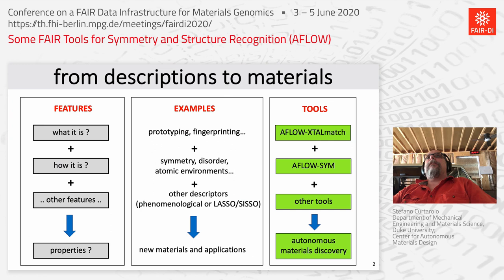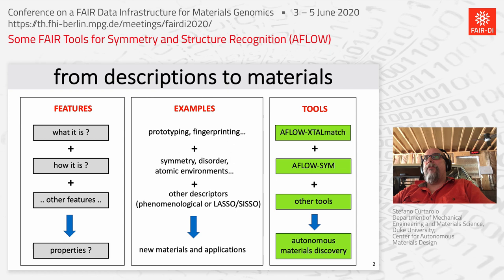Let's start from description of materials. Descriptions are based on features — what this material is, for instance, prototype or fingerprints, how the material is organized, what the symmetries are, or the disorder, what are the atomic environments. Other features can be phenomenological, or calculated with algebraic methods and optimized algebraic methods. Once we have the features, we get the properties and new materials, and applications.